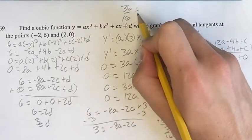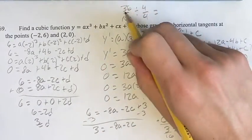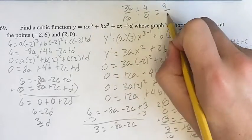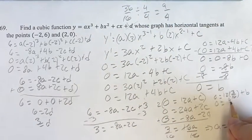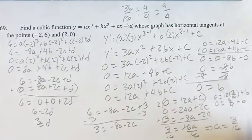36 over 16. Divide both sides by 4. We get 9 fourths plus c. Therefore, c equals negative 9 fourths.